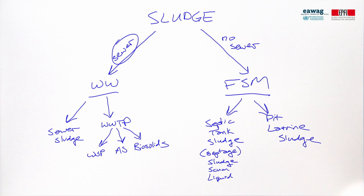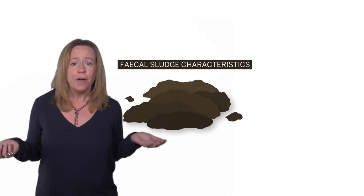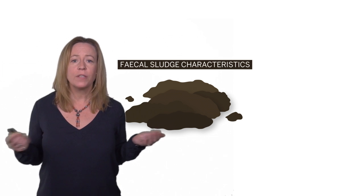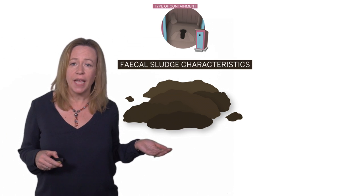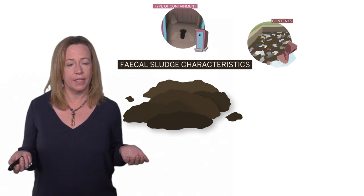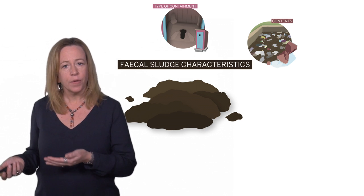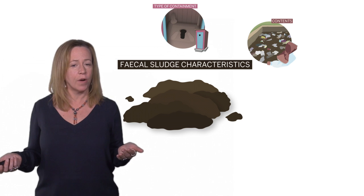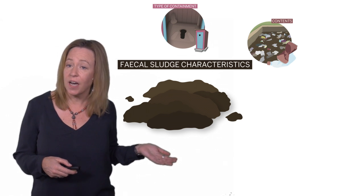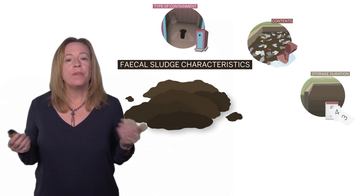Fecal sludge is also highly variable because it comes from literally any type of technology not connected to the sewer, from dry toilets to flush toilets, with or without gray water. Additional contributors to variability include the type of containment — pit latrines versus septic tanks — and what is going into the containment: excreta and black water, with or without forms of gray water, meaning it can range from a slurry that is mostly water all the way to a semi-solid. This is the contents.